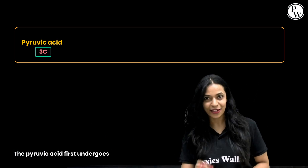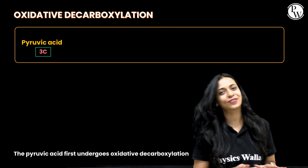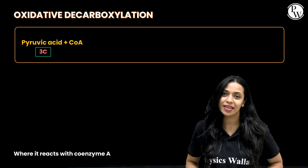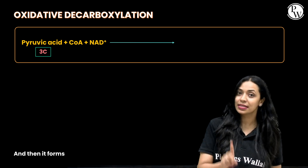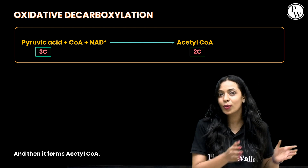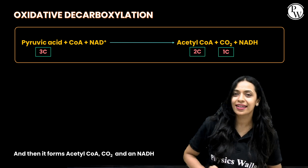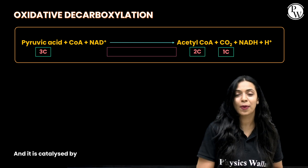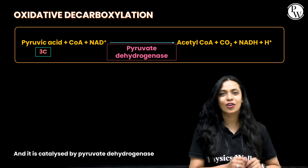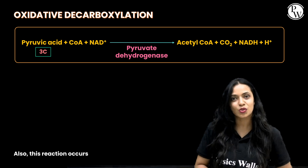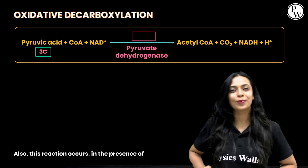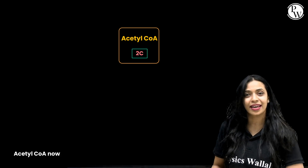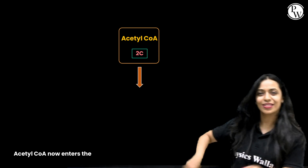The pyruvic acid first undergoes oxidative decarboxylation, reacts with coenzyme A and NAD+, and then it forms acetyl-CoA and CO2, and NADH + H+. This reaction is catalyzed by pyruvate dehydrogenase and occurs in the presence of magnesium ions. Acetyl-CoA now enters the Krebs cycle.